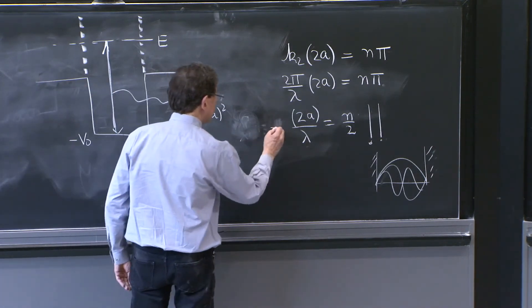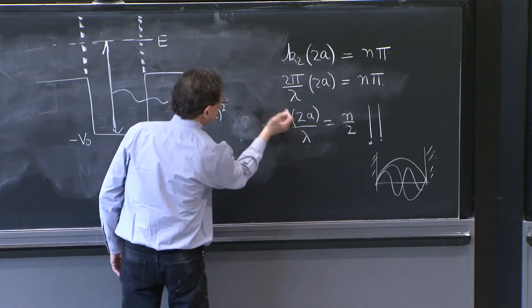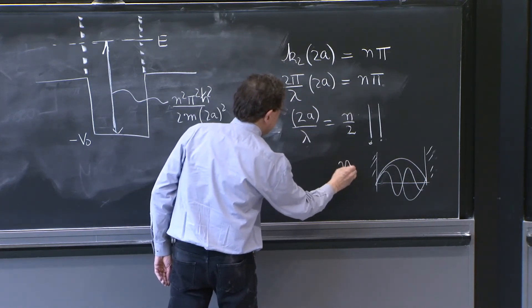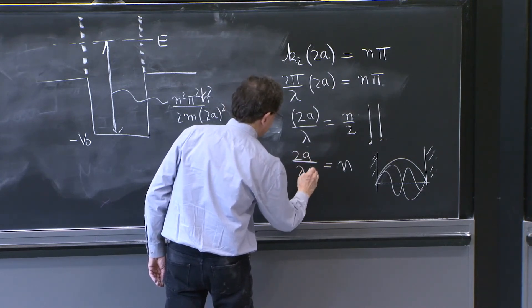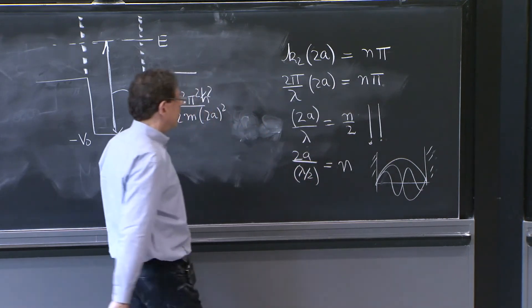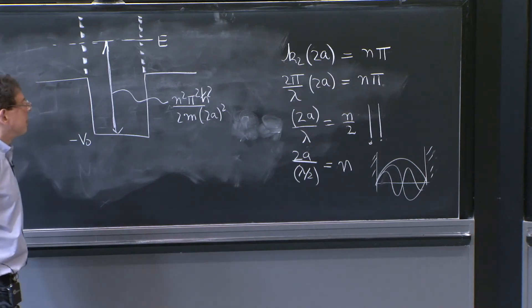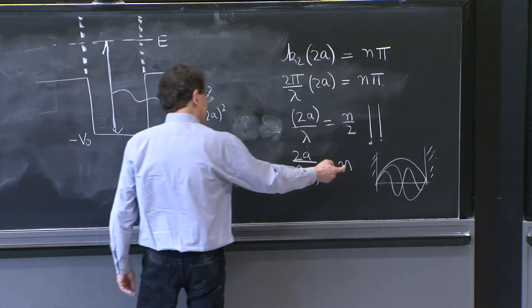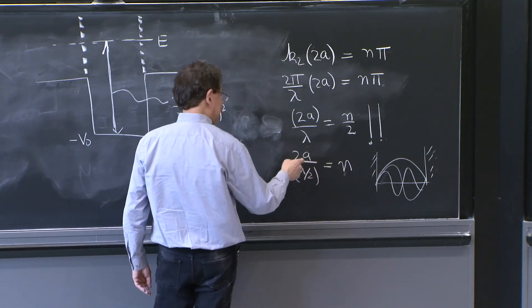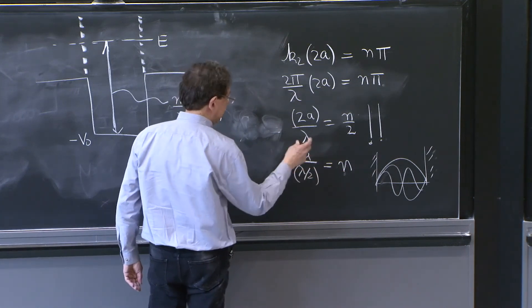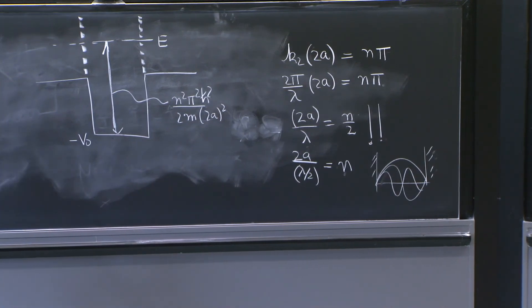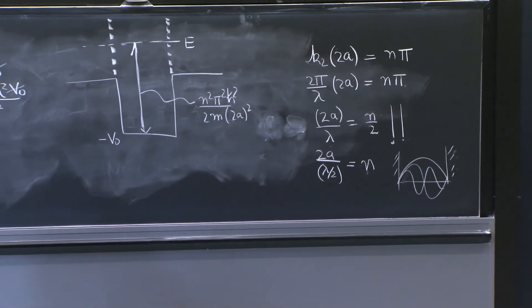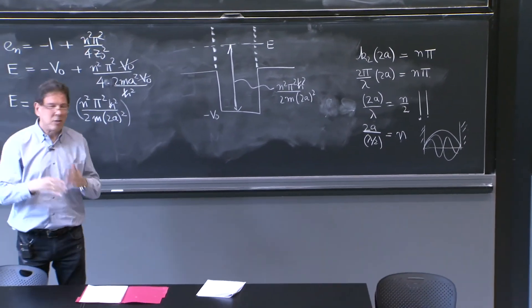So the way I think I wanted to do it is this equation can be written as n is equal to 2a over lambda over 2. That's the same equation. So in this way, you say an integer number of times is 2a divided by lambda over 2,